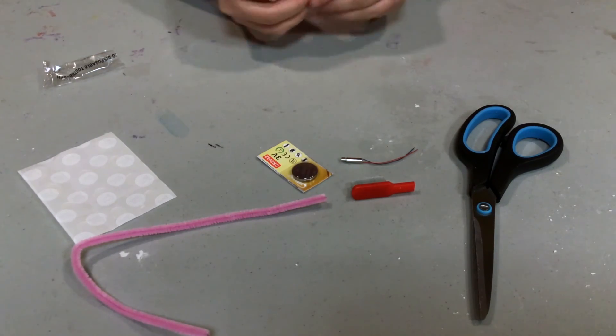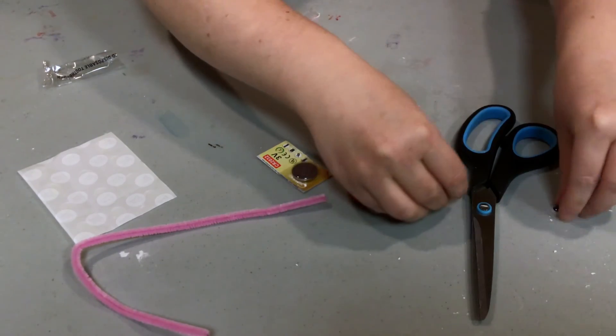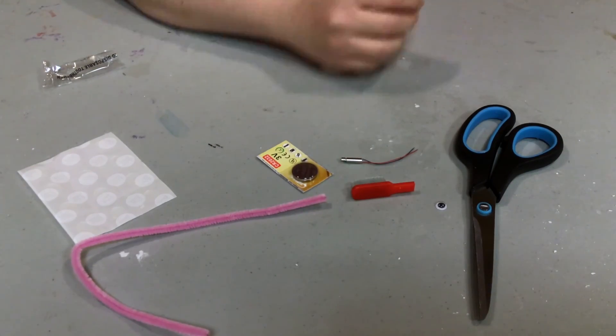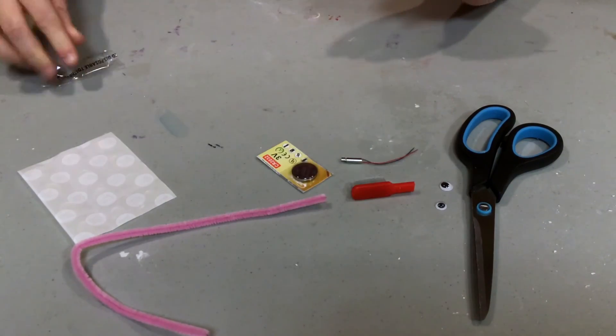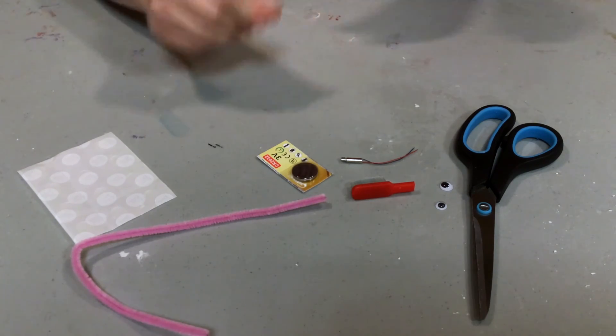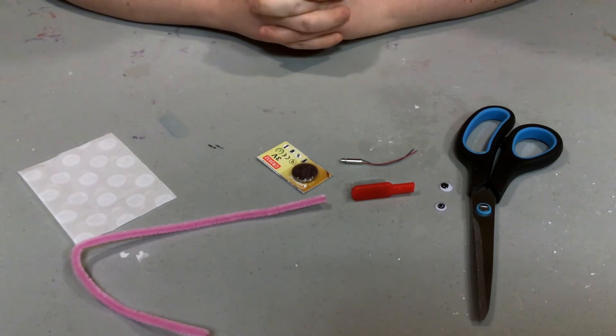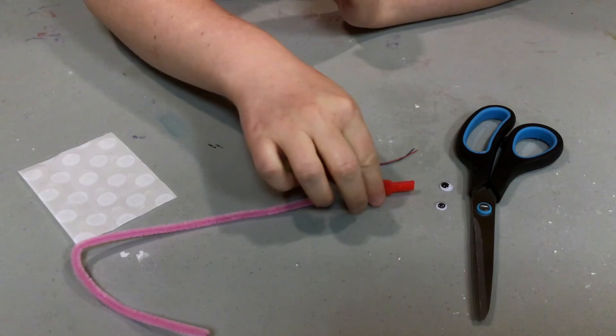And we are ready to get started making our Bristol-Bot. So, the first step is to attach the battery and the vibrating motor to the toothbrush head.